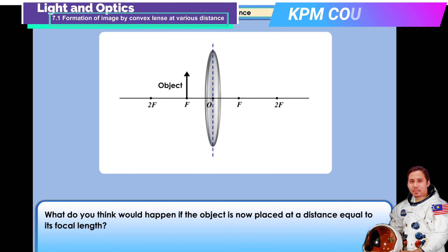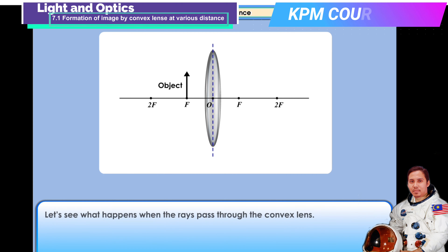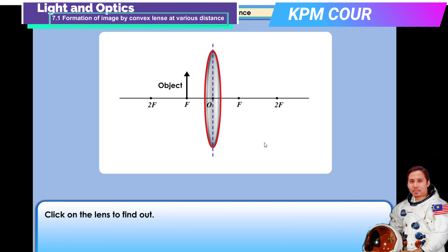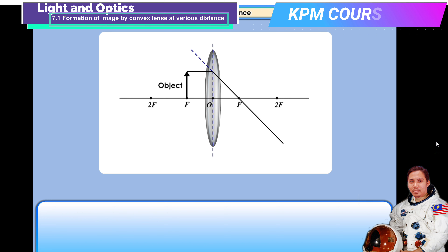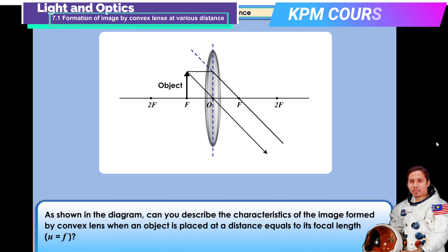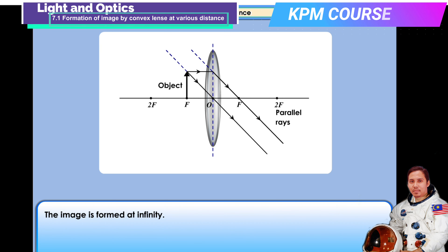What would happen if the object is placed at a distance equal to its focal length? Let's see what happens when the rays pass through the convex lens. This can be symbolized as u = f. Can you describe the characteristics of the image formed by a convex lens when an object is placed at a distance equal to its focal length? The image is formed at infinity.